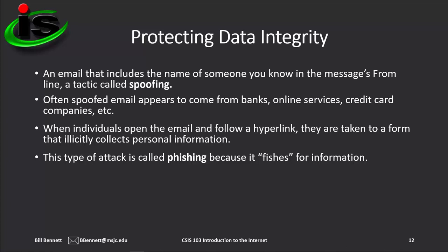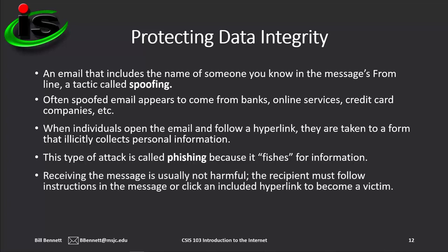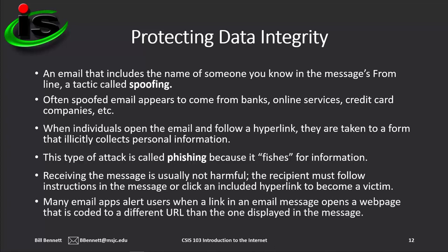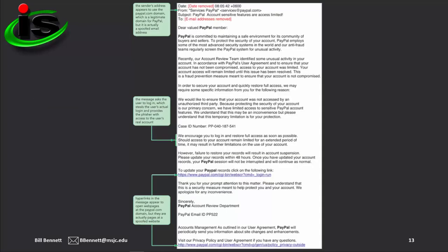Some companies become aware of fraudulent emails when customers contact them to verify the original message. This type of attack, called phishing — because it phishes for information — is difficult to prevent because it involves sending email messages that appear legitimate but include links to spoofed websites. Simply receiving the message usually doesn't cause any harm; the recipient must follow the instructions or click included hyperlinks to become a victim. The attacker sends an email to a large number of recipients with the goal of finding recipients who have accounts at the targeted website, telling the recipient that his or her account has been compromised. Many email apps alert users when a link opens a webpage coded to a different URL than the one displayed.